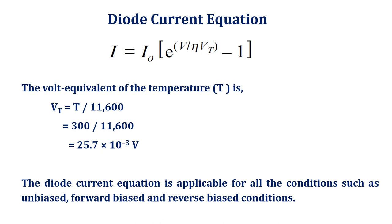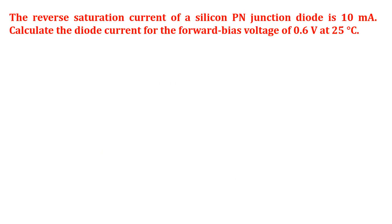Let us see a simple example. The reverse saturation current of a silicon PN junction diode is 10 milliamperes.